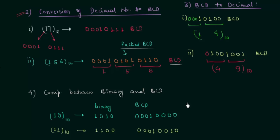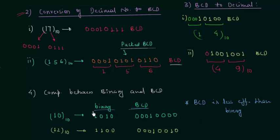Therefore, BCD is less efficient than binary because it uses more bits. Additionally, arithmetic operations such as addition and subtraction are more complicated in BCD than in binary. These two points define that binary representation is much better compared to BCD — BCD uses more bits and arithmetic operations in BCD are more difficult.